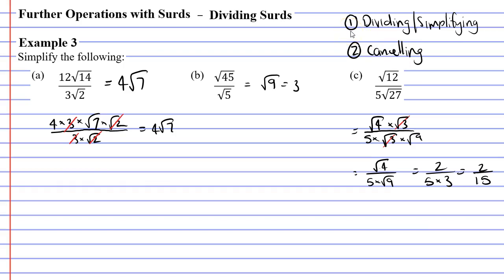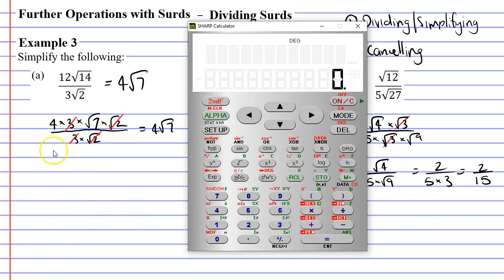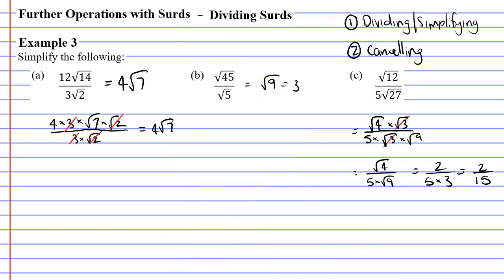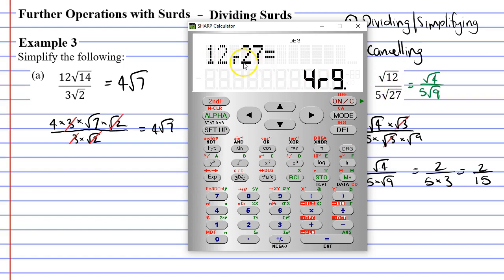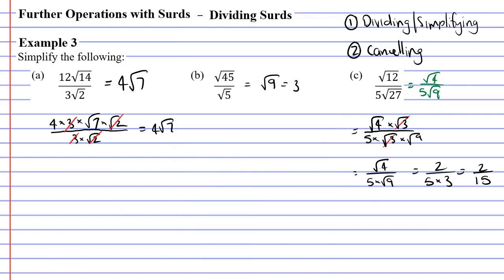The first method also works here by simplifying. We ignore the square root signs and simplify 12 over 27 to 4 over 9. This lets us rewrite the expression as root 4 over 5 root 9. Since root 4 is 2 and root 9 is 3, the denominator becomes 5 times 3, which is 15, giving the same answer of 2 over 15.